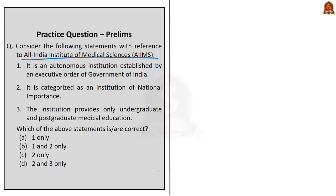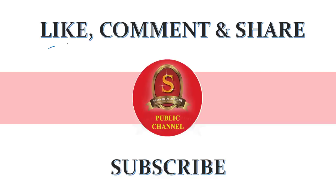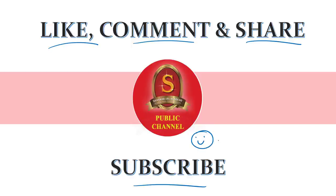The question about AIIMS gives three statements. Statement one — it is an autonomous institution established by an executive order of the Government of India — is incorrect; it was established through legislation. Statement two — it is categorized as an institution of national importance — is correct. Statement three — the institution provides only undergraduate and postgraduate medical education — is incorrect, as its functions also include nursing and dental education, and teaching in related physical and biological sciences. Therefore, the correct answer is option C: two only. This concludes today's Hindu news analysis. If you like the video, click the like button, comment, share, and subscribe to Shankar Ayes Academy YouTube channel for more updates and content on civil service exam preparation.